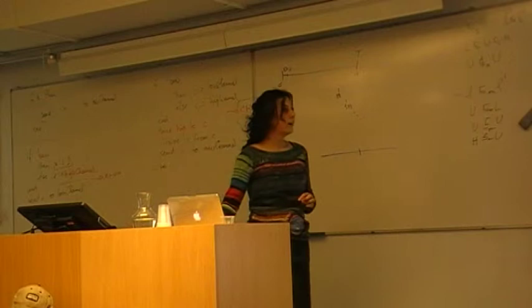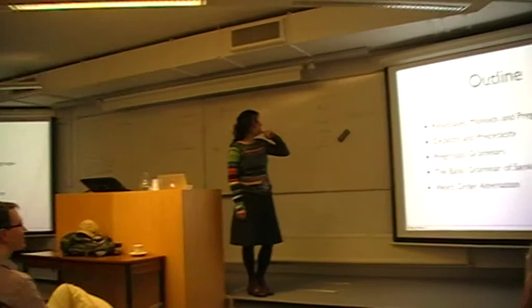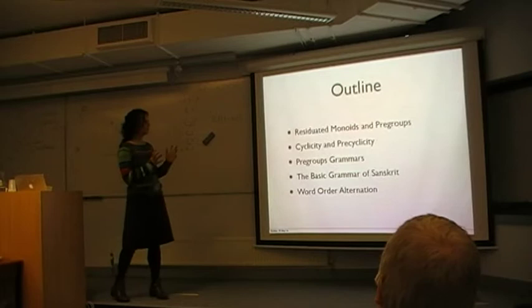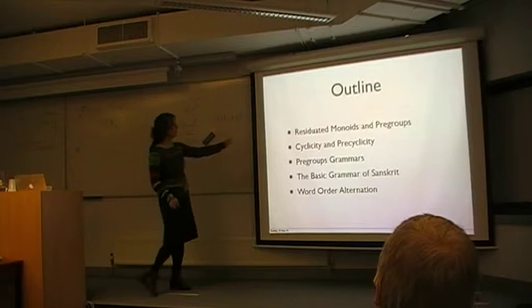I'm going to try and keep it short and very quickly talk about these ordered structures that have been around, that have been applied to reasoning about grammar of natural languages. So residuated monoids, pregroups. And I'm going to talk about some new properties. Well, the second one is preciclicity is kind of new. That I've been thinking about in the weekends recently.